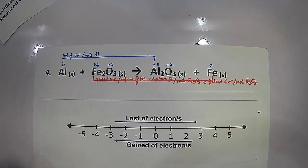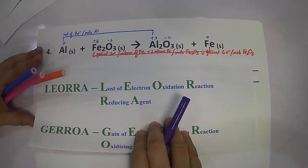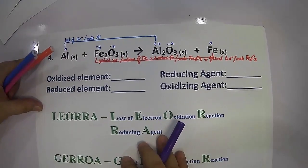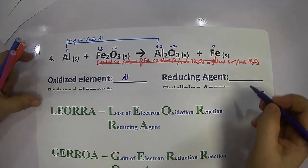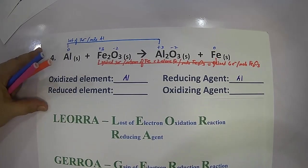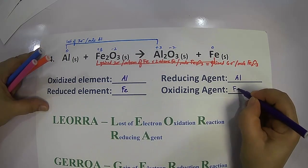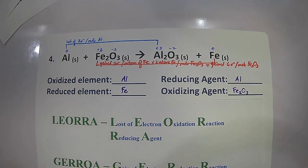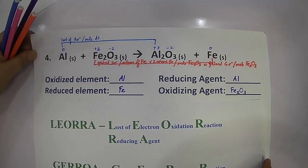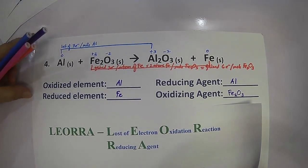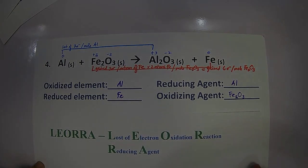The element that is oxidized — the one that lost electron — is aluminum, and it is the reducing agent. The element that is reduced — the one that gained electron — is iron. So the oxidizing agent is ferric oxide. That's all for identifying the oxidizing agent, reducing agent, and the oxidized and reduced elements in a redox equation. Next, we will learn how to balance a redox equation. Thank you.